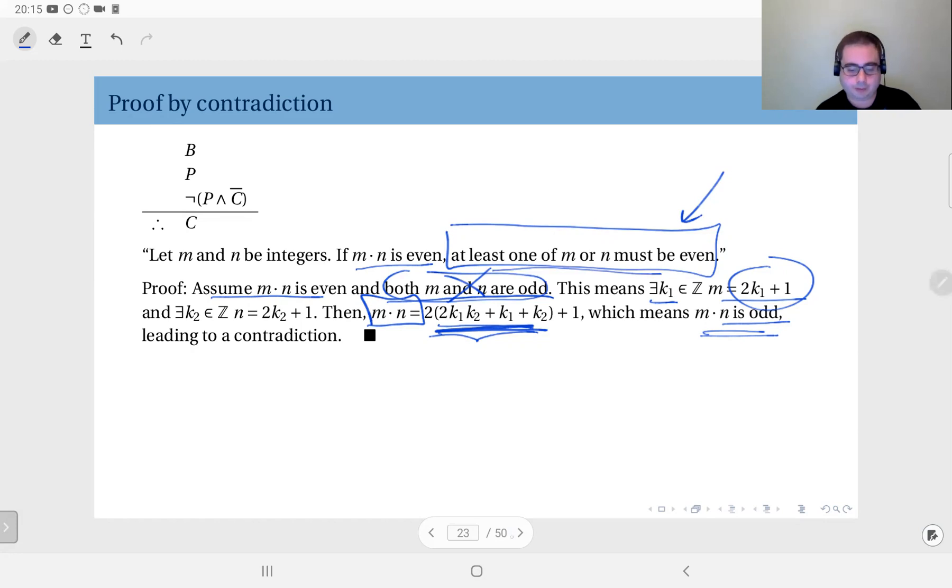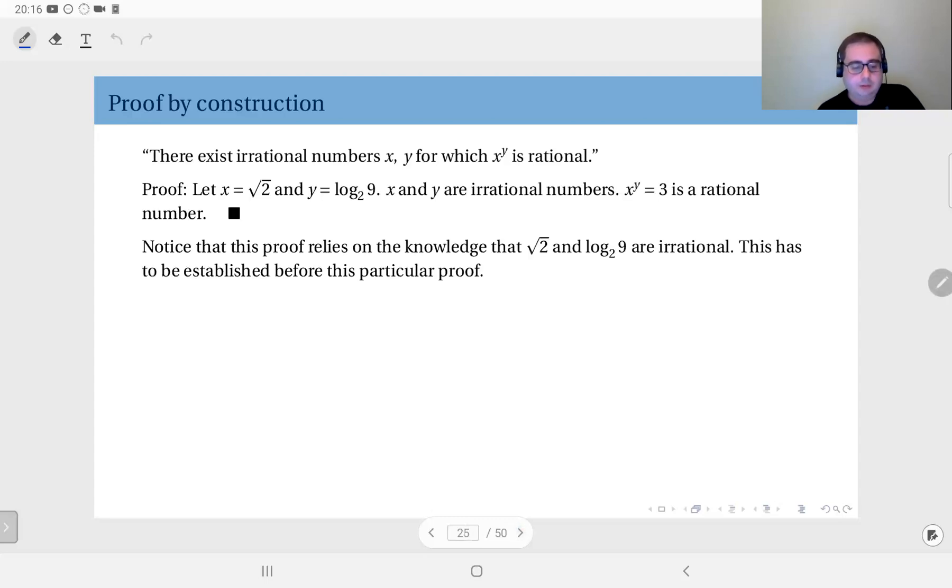Next one is proof by construction. This is a classical example: there exist irrational numbers x and y for which x to the power y is rational. At this point it's not really necessary, so I'm not going to define what's a rational number, what's an irrational number, etc. I'm just going to show you how the proof works. Assume x is square root 2 and y is equal to log base 2 of 9.